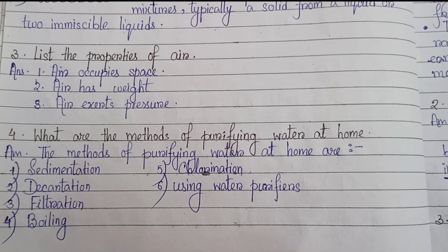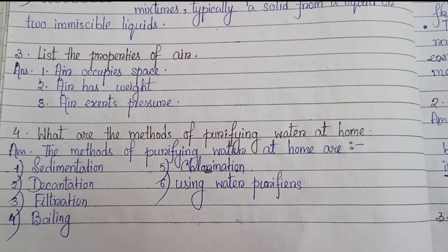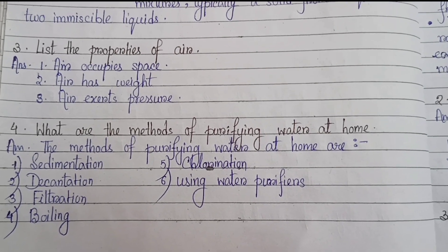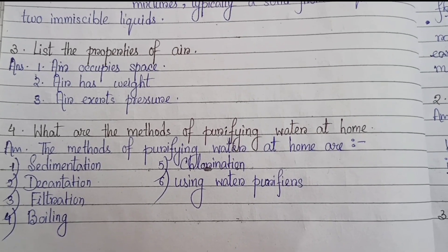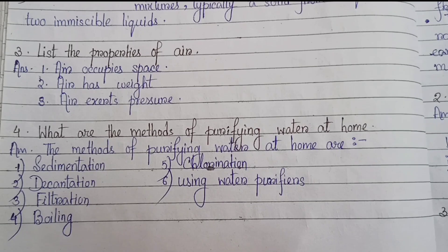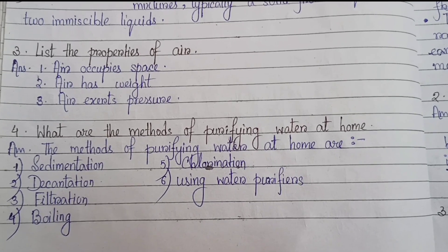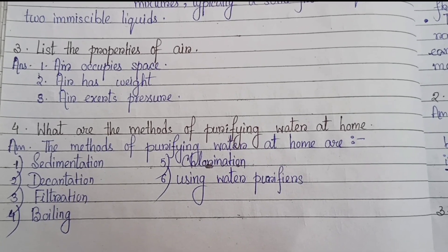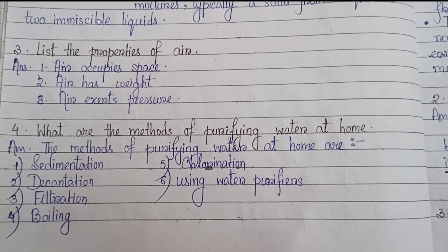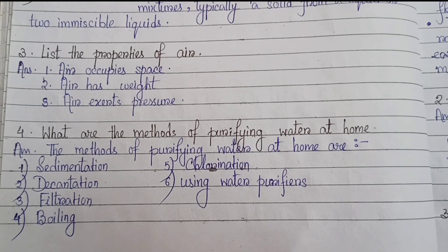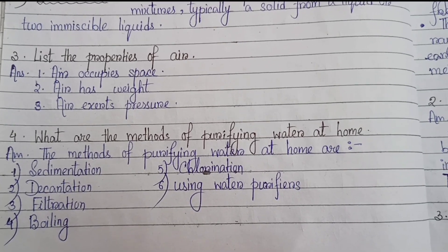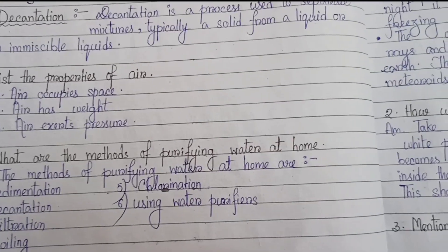Number 4: what are the methods of purifying water at home? The methods of purifying water at home are: Number 1: sedimentation. Number 2: decantation. Number 3: filtration. Number 4: boiling. Number 5: chlorination. Number 6: using water purifiers.